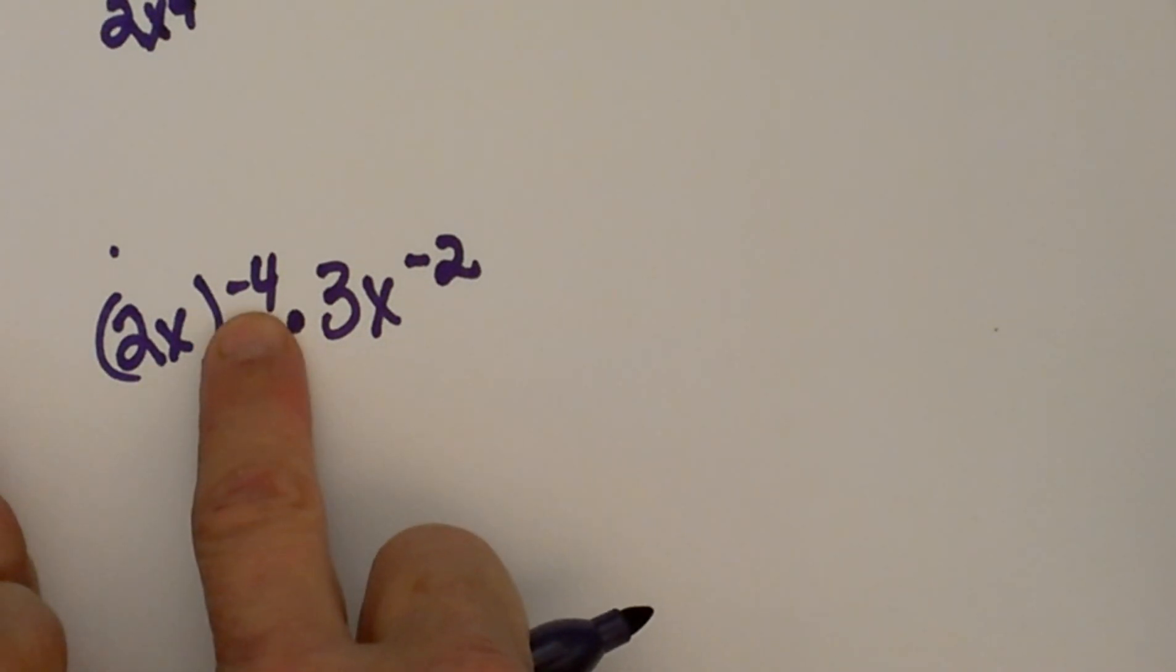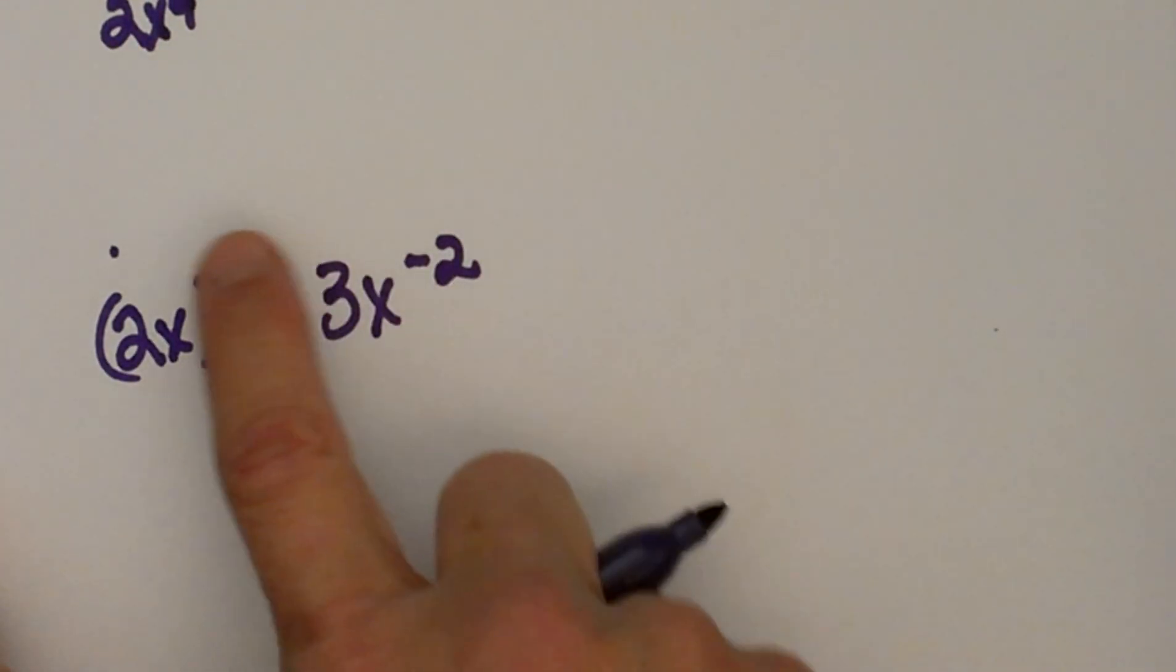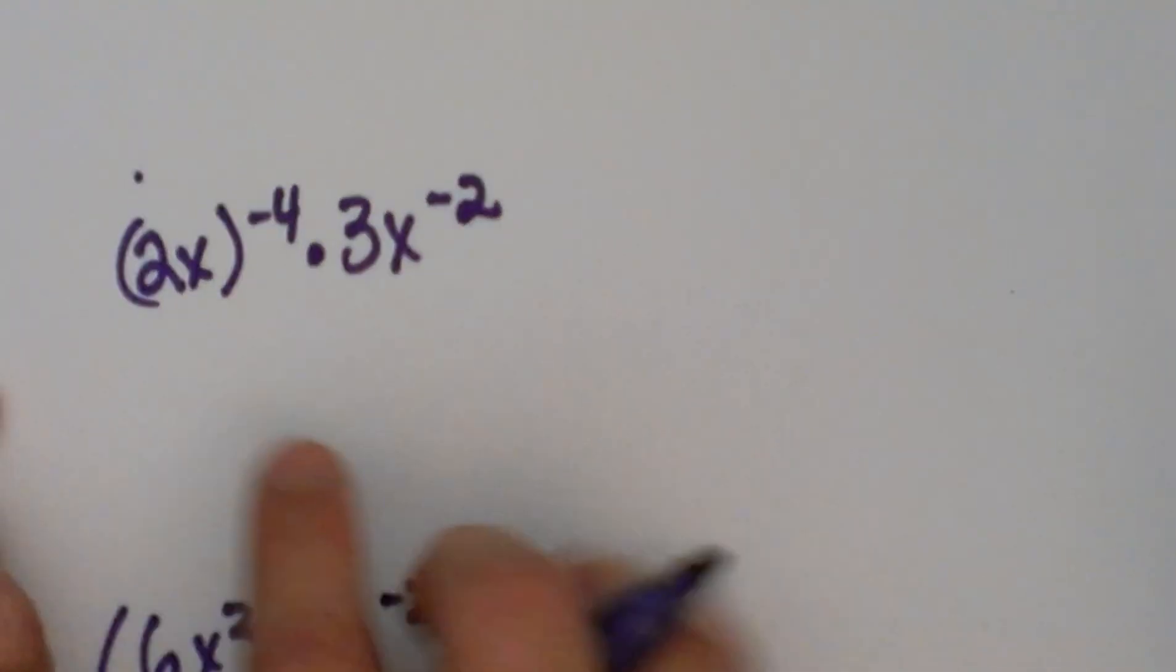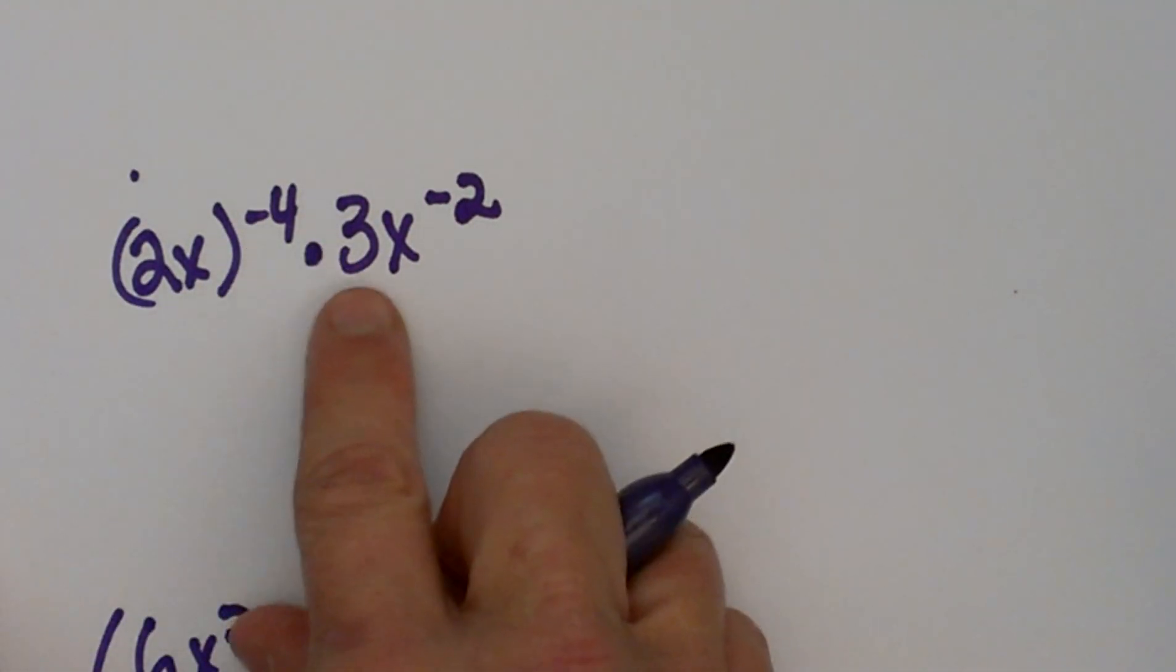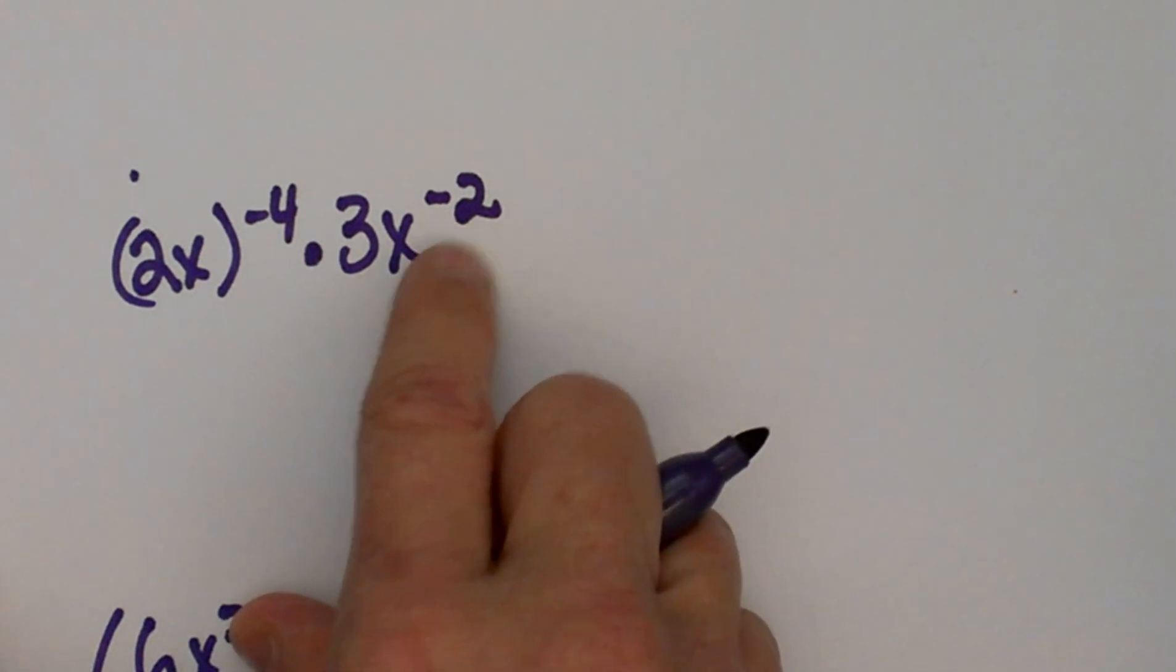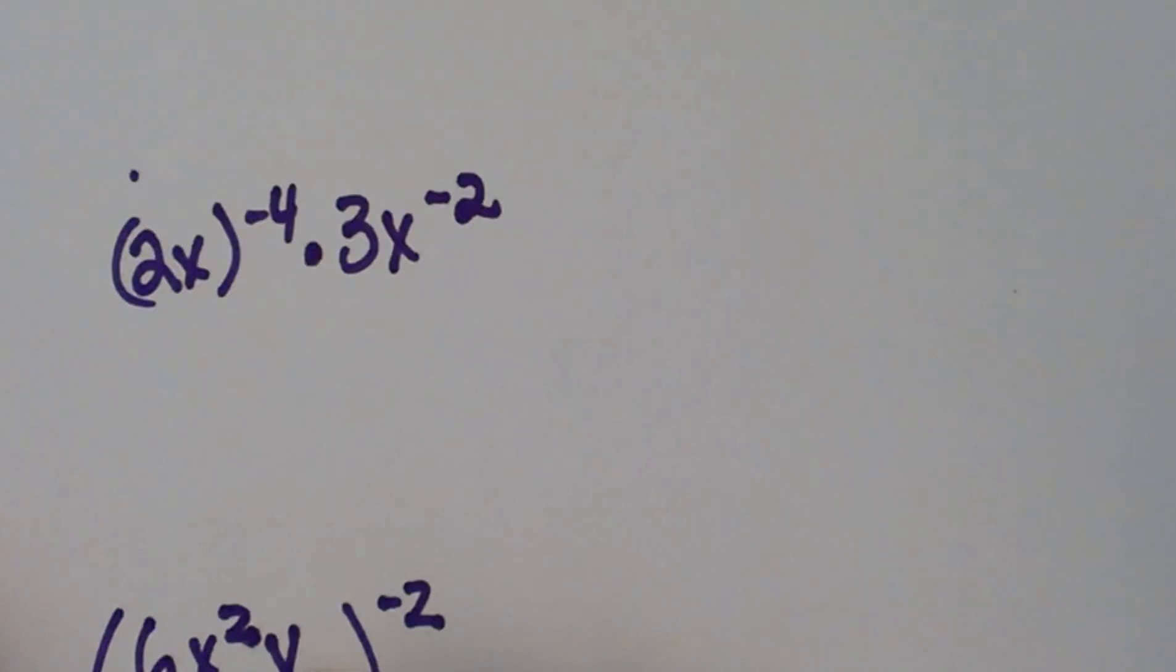We have (2x)^(-4) times 3x^(-2). Now notice the parenthesis - that's telling me that both the 2 and the x are being raised to the negative fourth, versus the second part which is 3x^(-2), where only the x is being raised to the negative second. So that's one thing you need to make sure you understand the difference between those two.